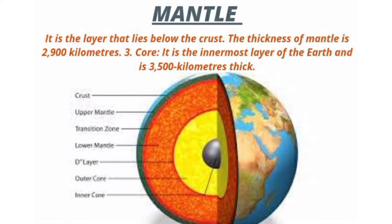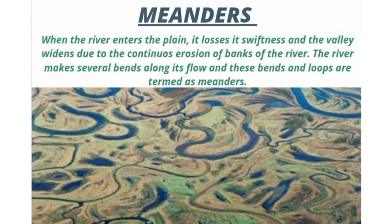Meanders. When the river enters the plain, it loses its swiftness and the valley widens due to continuous erosion of the banks of the river. The river makes several bends along its flow, and these bends and loops are termed as meanders.